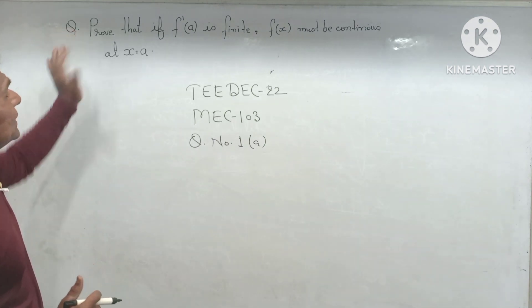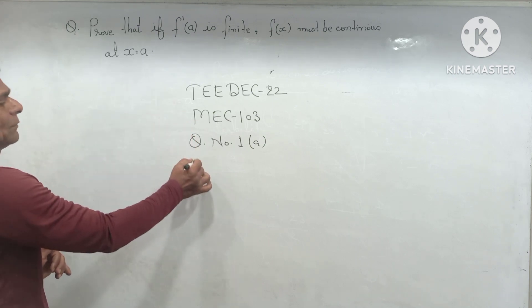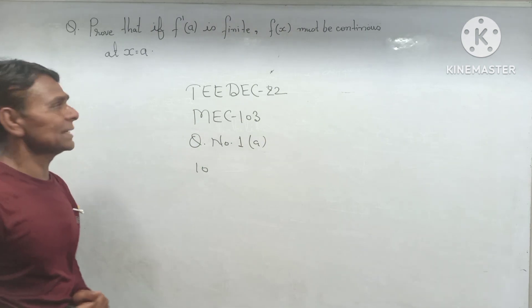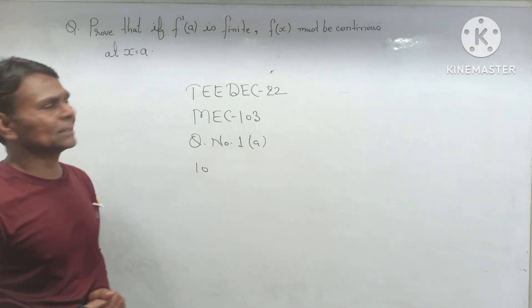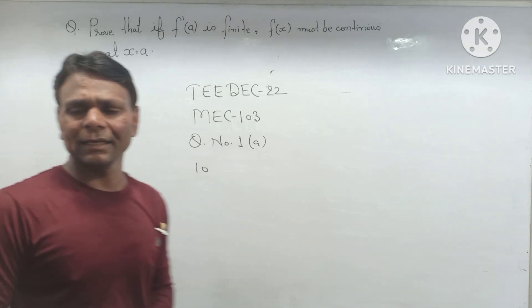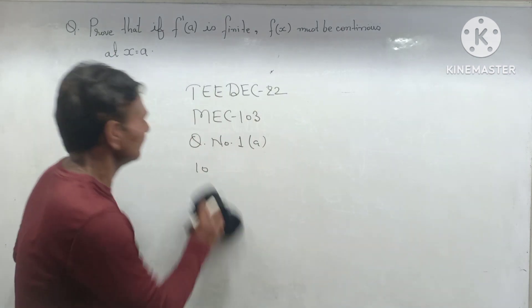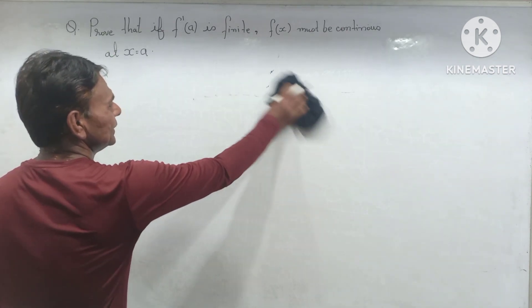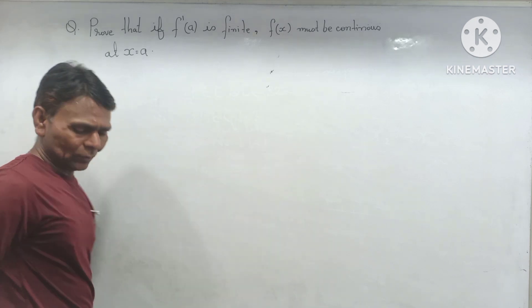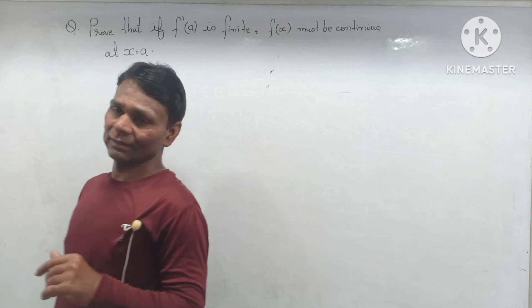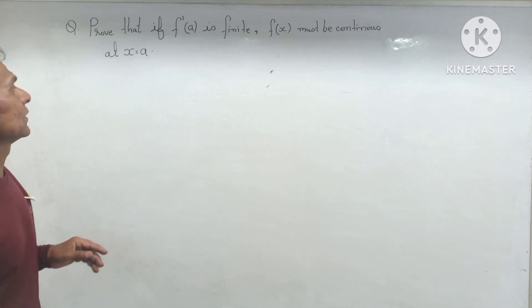You can see the question carries 10 marks. Prove that if f dash a is finite, f(x) must be continuous at x equal to a. This question is from term examination December 22, it carries 10 marks. 1a is here, 1b is available on our channel.